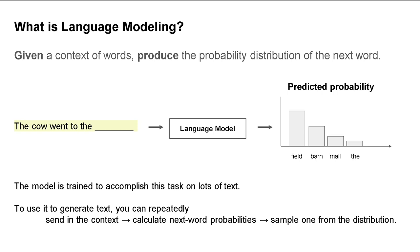The language modeling problem is a very straightforward problem. The idea is you have some sequence of text — maybe it's characters, maybe it's tokens, maybe it's words — and you want to produce a probability over the next word, token, or character. One of the nice properties of this model is that when you're training it, you don't need any supervised training data. You can just look at data in the wild, and that natively gives you the training data you need.